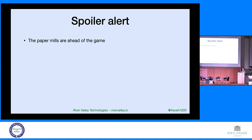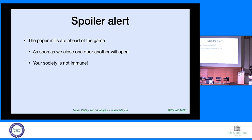Spoiler alert: paper mills, so-called paper mills, are really clever. They're making a lot of money and they're ahead of the game. Whatever we do, when we close one door, they'll find another door — that's what we've found. If you think your society or publishing area is immune, hopefully it will be, but you never know. One journal might be attacked, and as soon as the acceptance rate goes down, they'll suddenly move to another journal. We really have to be alert.